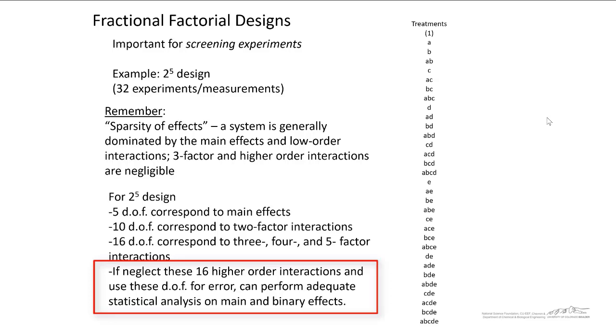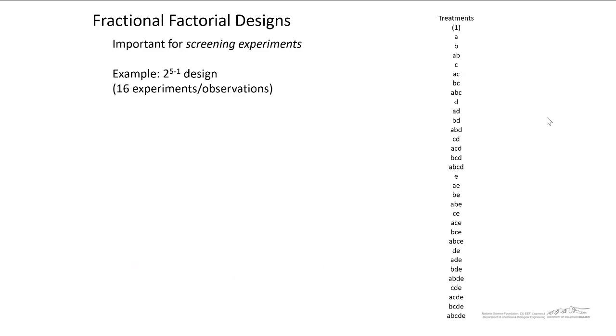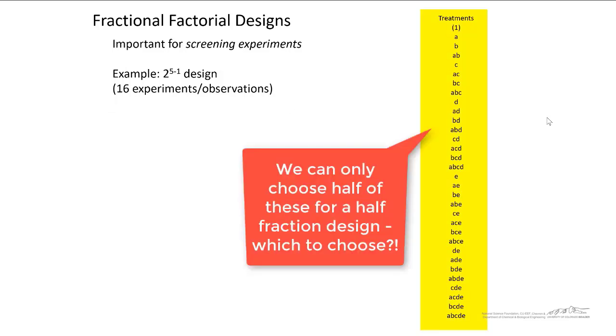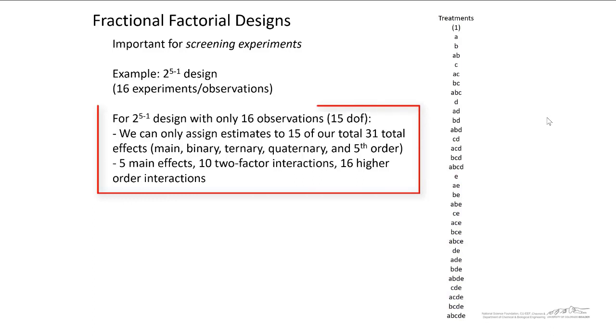And this is what I've shown you in some previous screencasts. But now if we look at a 2 to the 5 minus 1 half fractional factorial design, we would have only 16 experiments or observations. We have 32 possible treatment combinations shown over here on the right. And so the question becomes, how do we decide which of these treatment combinations to actually put together and perform? For a 2 to the 5 minus 1 design with only 16 observations, that means we only have 15 degrees of freedom.